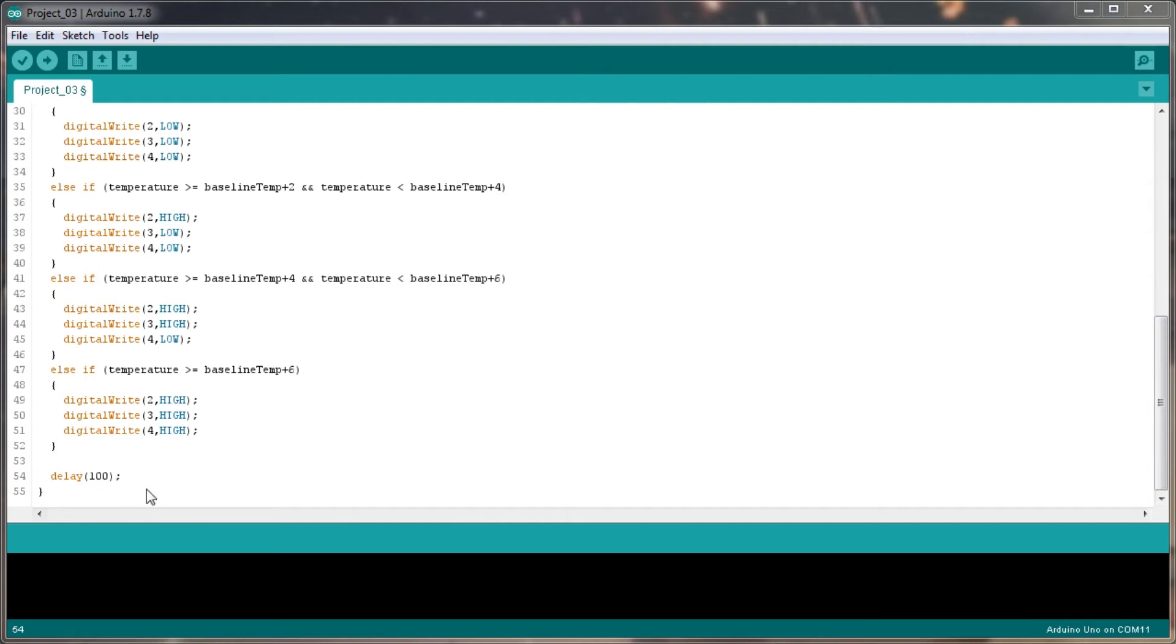And then we're going to have a delay. I've put in 100 here, but the manual says 1, let's do it as 1. Then we'll save that, and then we'll upload this to the Arduino, and we'll see if this works.